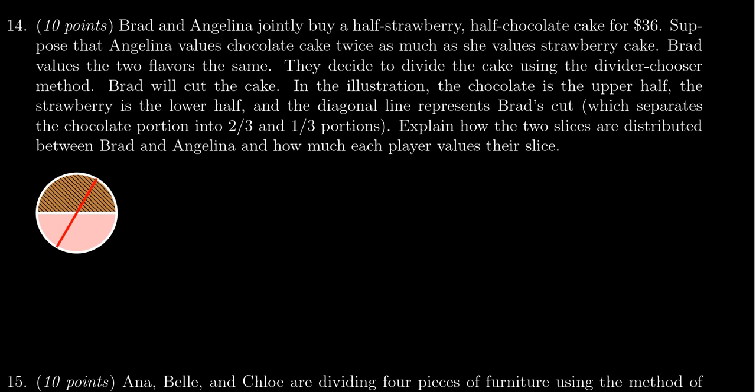Now suppose that Angelina values the chocolate cake side twice as much as she values the strawberry cake side. I actually want to look at that for a moment. If she values the chocolate side C at twice the value of the strawberry side, so 2s there.